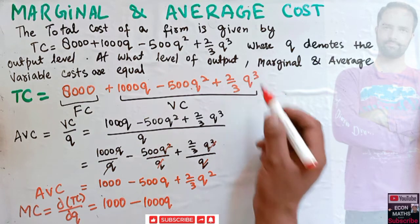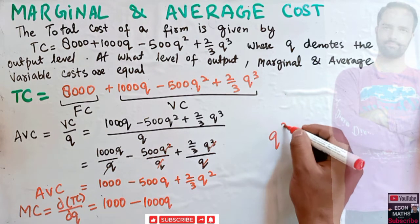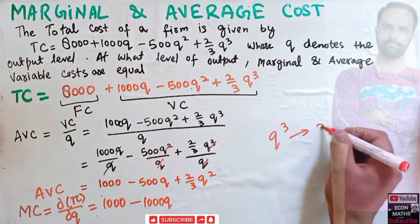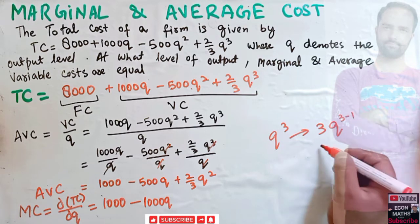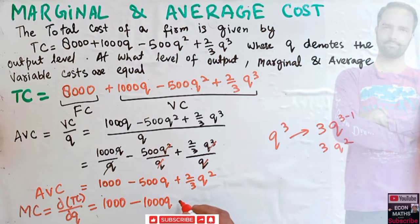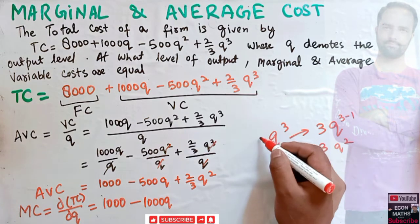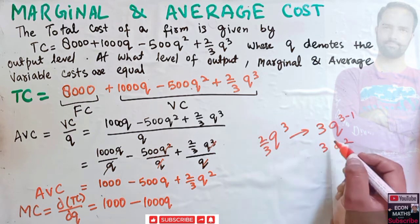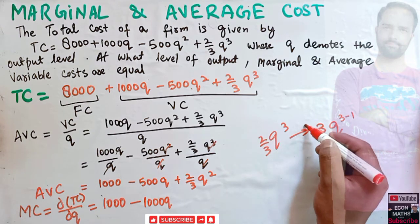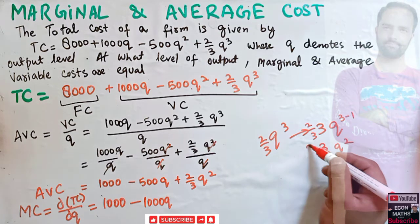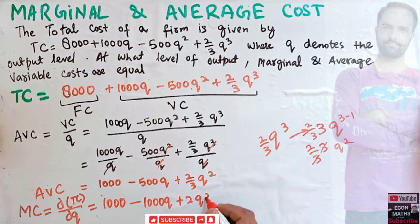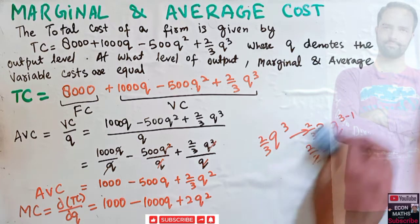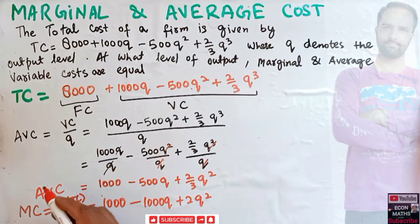The derivative of Q³ is 3Q², so with the coefficient (2/3), we get (2/3)×3Q² = 2Q². Therefore our marginal cost is MC = 1000 - 1000Q + 2Q².